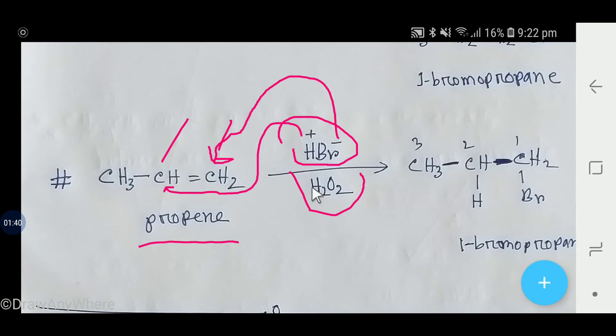Without presence of hydrogen peroxide, bromide will add to this carbon and hydrogen will add to this carbon. However, since this is anti-Markovnikov rule, bromide will add to this carbon, that is this carbon.